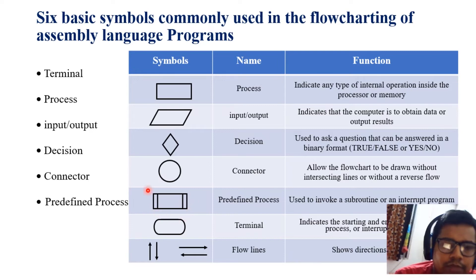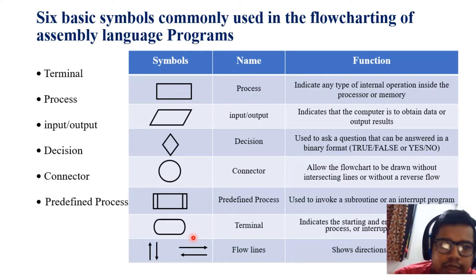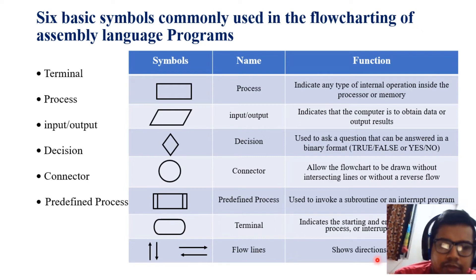The predefined process symbol is used to invoke a subroutine or an interrupt program. The terminal symbols indicate the starting and end of the program. The directional arrows are called flow lines and they indicate the direction of data flow.